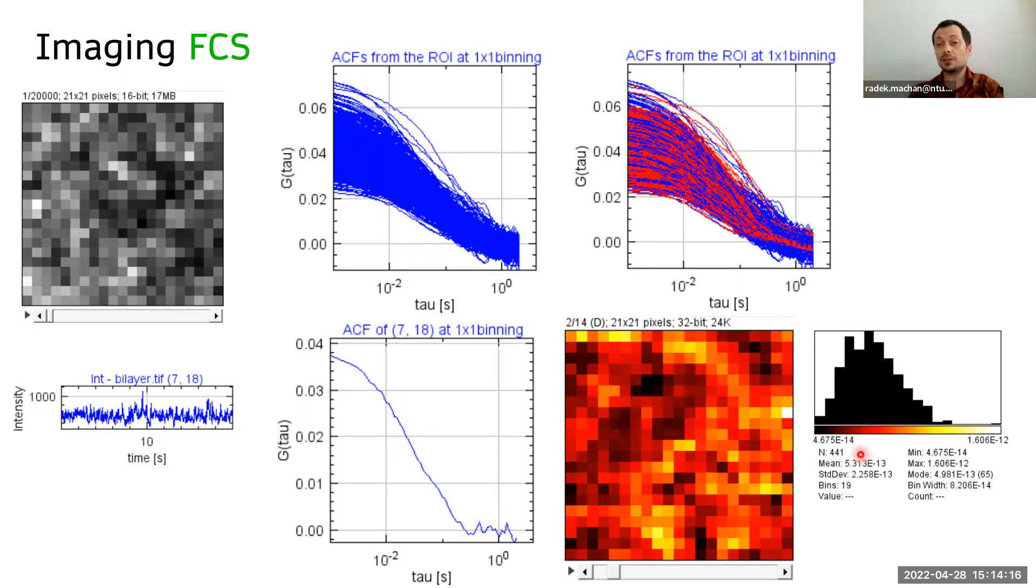such as diffusion coefficient and its distribution. And this is all done in our imaging FCS plugin, which Thorsten started developing nearly 10 years ago. And you can install it through imaging FCS update site in Fiji.